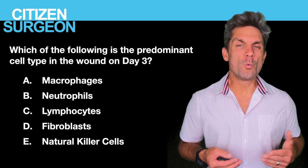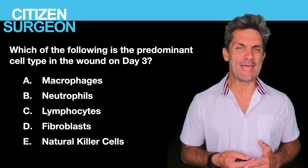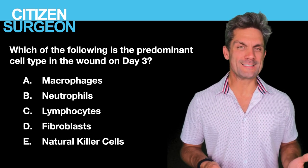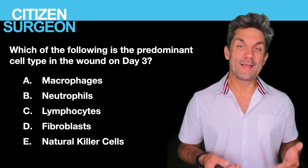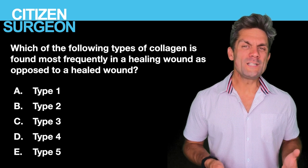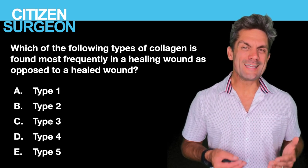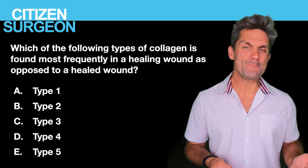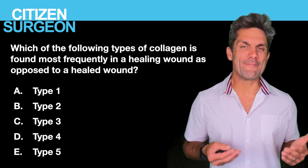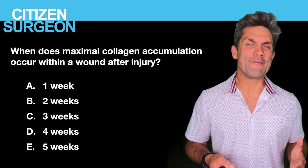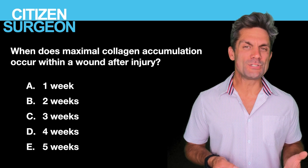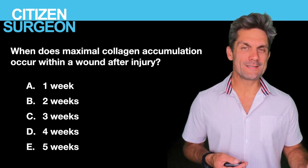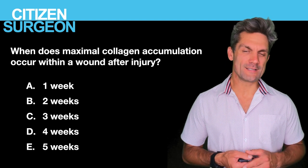Question three: which of the following cells is the predominant cell type on day three following an injury? Is it macrophages, neutrophils, lymphocytes, fibroblasts, or natural killer cells? Question four: which type of collagen is found most frequently in a healing wound as opposed to a healed wound? Is it type one, two, three, four, or five collagen? Question five: when does maximal collagen accumulation occur in the wound following injury? Is it at one, two, three, four, or five weeks following injury?